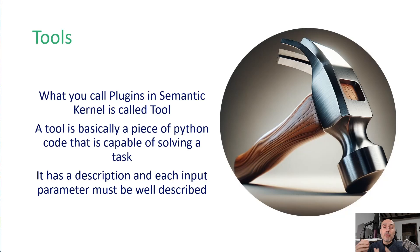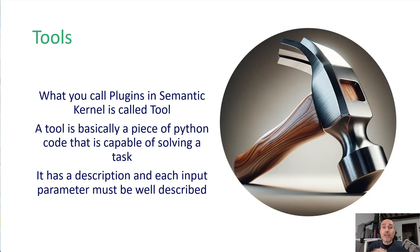LangChain has the same concept as Semantic Kernel plugins, but in LangChain they are called tools. A tool is simply a piece of Python code that is capable of solving a problem. An agent can have a list of tools it can use, and each tool is associated with a description that clearly identifies what the tool can do. So the agent can use the large language model's powerful capabilities to choose the right tool to use — the same thing we saw in the Semantic Kernel video.